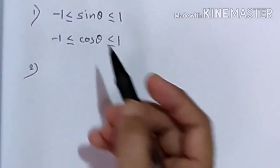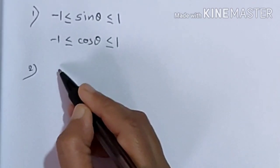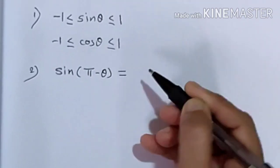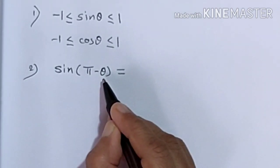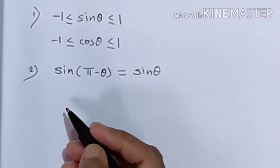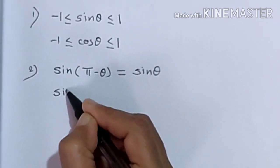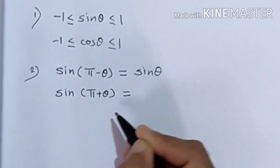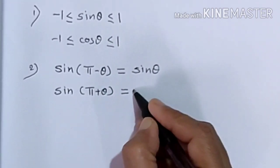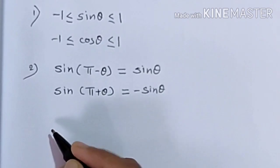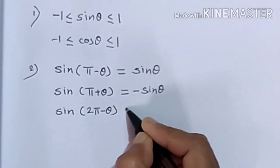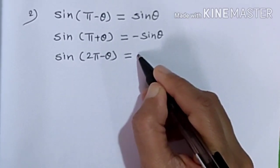Next, we will also require some allied angle formulas. For sin: sin(π - θ) — the angle is in the 2nd quadrant where sin is positive — so we get sin θ. Sin(π + θ) — the angle is in the 3rd quadrant where sin is negative — so we get -sin θ. Sin(2π - θ) — the angle is in the 4th quadrant — so again we get -sin θ.